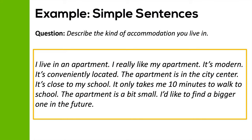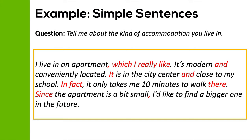So let's take a look at a better answer. To give a wide range of grammatical structures, you might change it to something like this: 'I live in an apartment, which I really like. It's modern and conveniently located. It's in the city center and close to my school. In fact, it only takes me 10 minutes to walk there. Since the apartment is a bit small, I'd like to find a bigger one in the future.' This answer uses a much wider range of grammatical structures and includes a variety of complex structures. Complex structures are simply when you combine more than one idea into one sentence — for example, combining 'I live in an apartment' and 'I really like my apartment' into 'I live in an apartment, which I really like.'